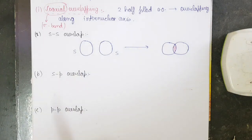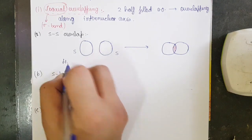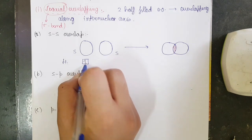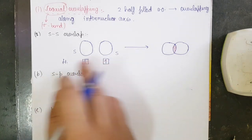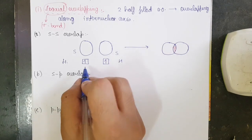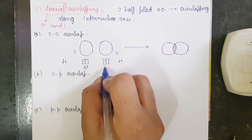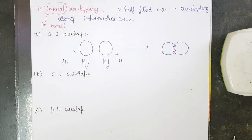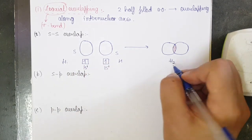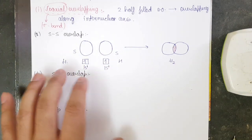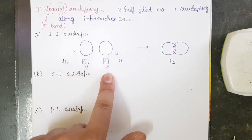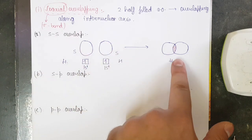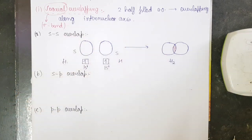What is the example of SS overlap? If I take hydrogen, it has one electron — 1s1. Similarly, another hydrogen also has 1s1. When combined, it gives the formation of H2 gas. So H and H, which are S orbital overlapping with S orbital — this kind of overlap is known as SS overlap.